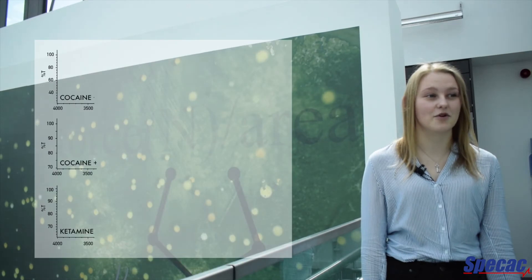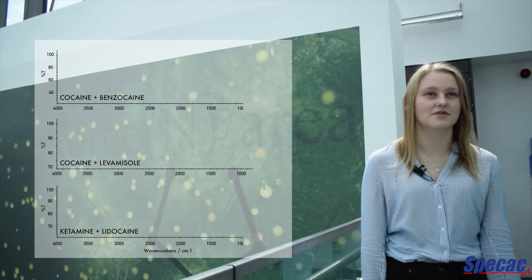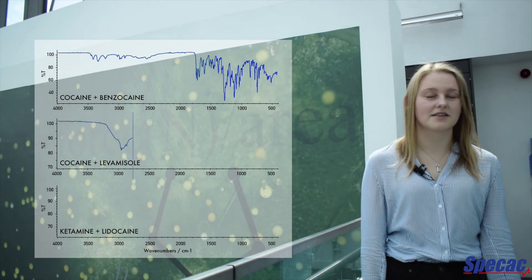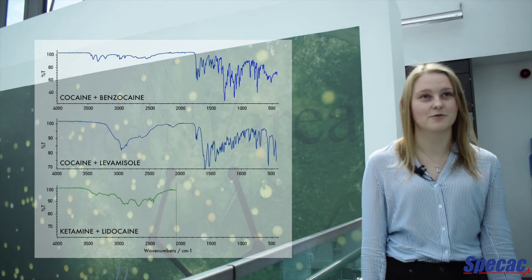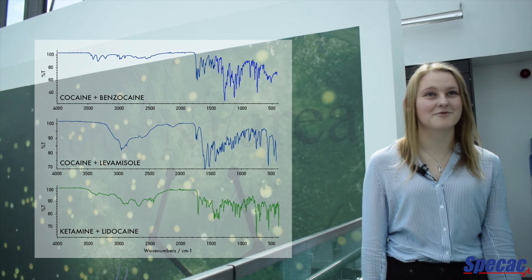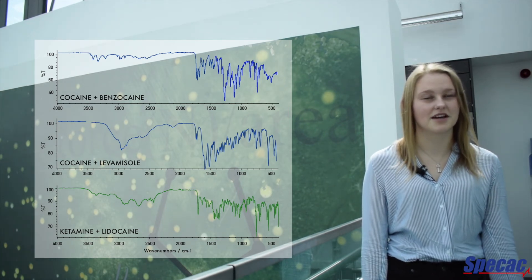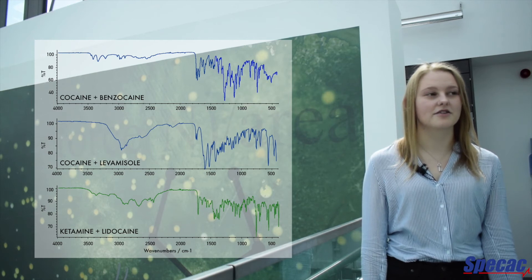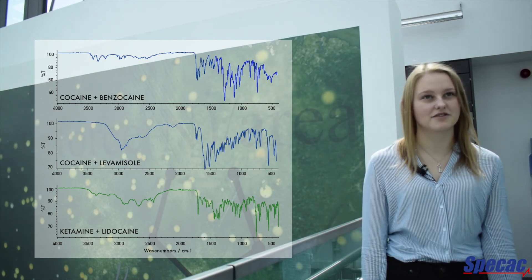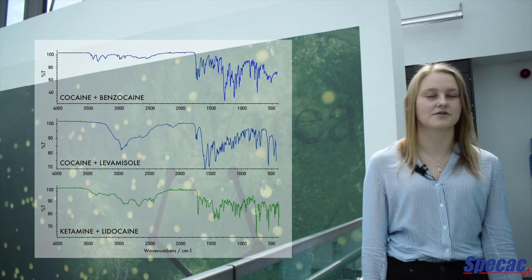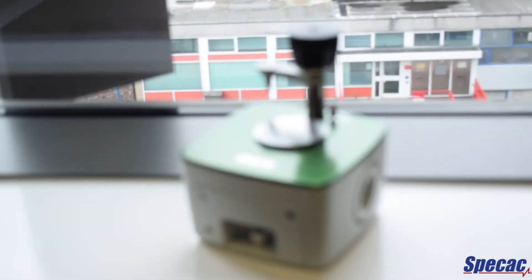One of the cocaine samples was cut mainly with benzocaine, and other samples were cut with levamisole, which is a cow dewormer. Looking into a lot of the cutting agents as well as the actual samples themselves was a big thing that I could use on both the GC-MS and the FTIR.